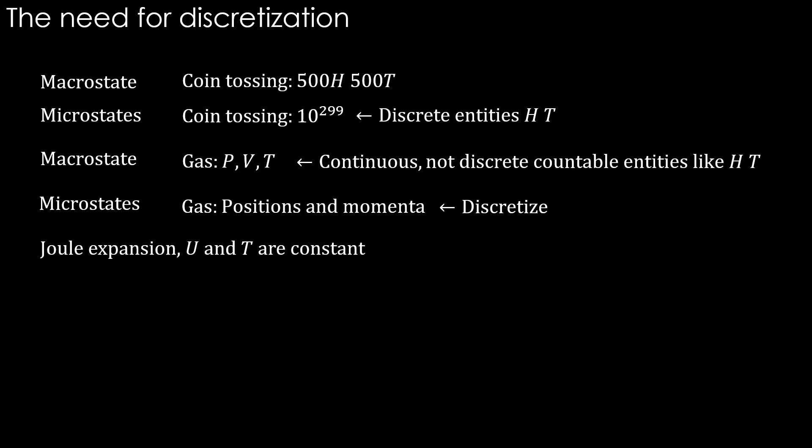In joule expansion, internal energy is constant. So the velocity is not changing here. So we can ignore momentum and discretize only positions of particles.